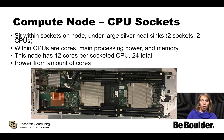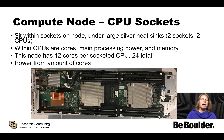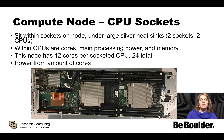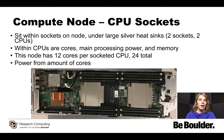Within the CPUs are cores, which are your main processing power, and memory. We can't see the cores or the memory in this picture because they're underneath the heat sinks. But this particular node has 12 cores per socketed CPU, which means it has 24 cores total. When you hear about how powerful a system is, it's usually because of how many cores it has — that's where you drive your power from.